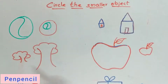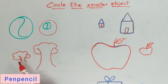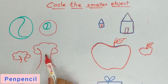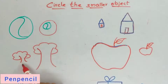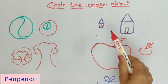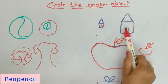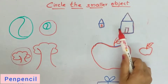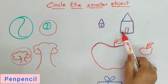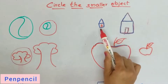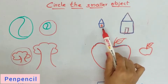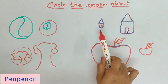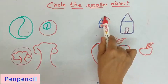This is a tree — which tree do we have to circle? This is a bigger one, this is a smaller one, so we have to circle this one. This is a hut — come on, you tell me which one we have to circle. Yes, correct — this one. You are a genius!